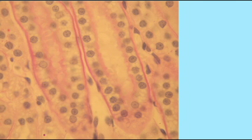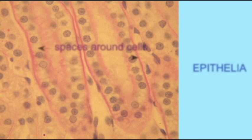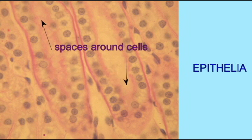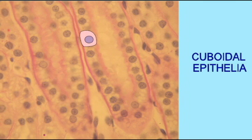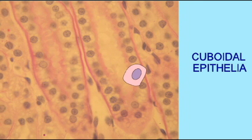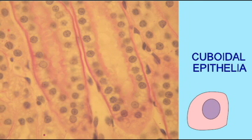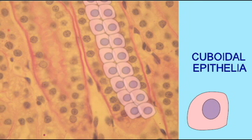This tissue is an example of simple cuboidal epithelia. It is epithelia because there are spaces around the cells, and these spaces, in this tissue of the renal tubule, ultimately connect with the outside of the body. The cells are cuboidal in shape — more or less squarish — and have a round nucleus.